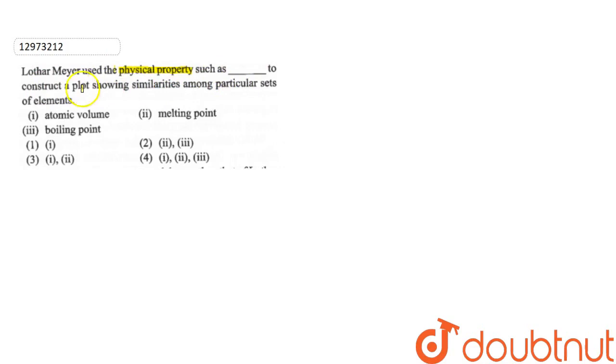Lothar uses the physical properties: atomic volume, melting point and boiling point. Let's see if there is a physical property here.